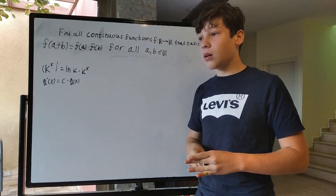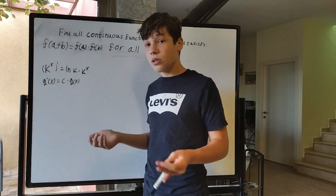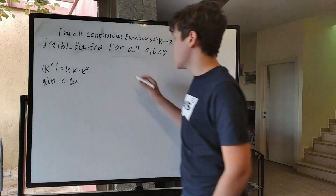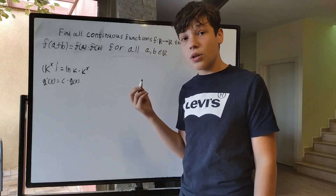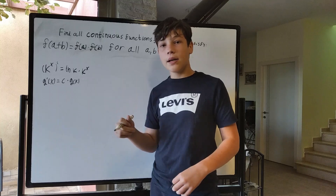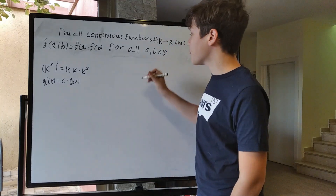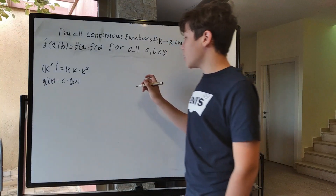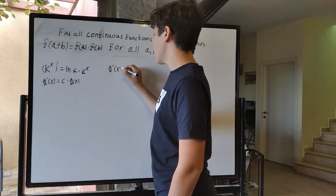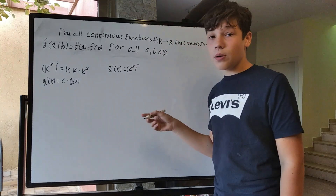This seems like a property that maybe doesn't happen all the time — what causes specifically exponents to do this? Well, what we can do is go back to the definition of the derivative. I have done a whole other video explaining the idea behind it and the actual formula itself; you can check it out, I'll link it in the description. But we have g prime of x, and our function is an exponent, k to the x.